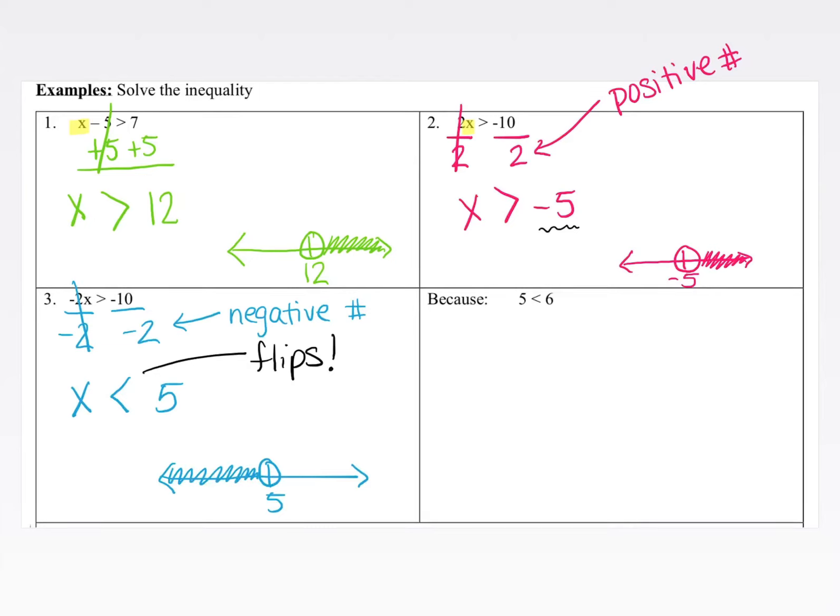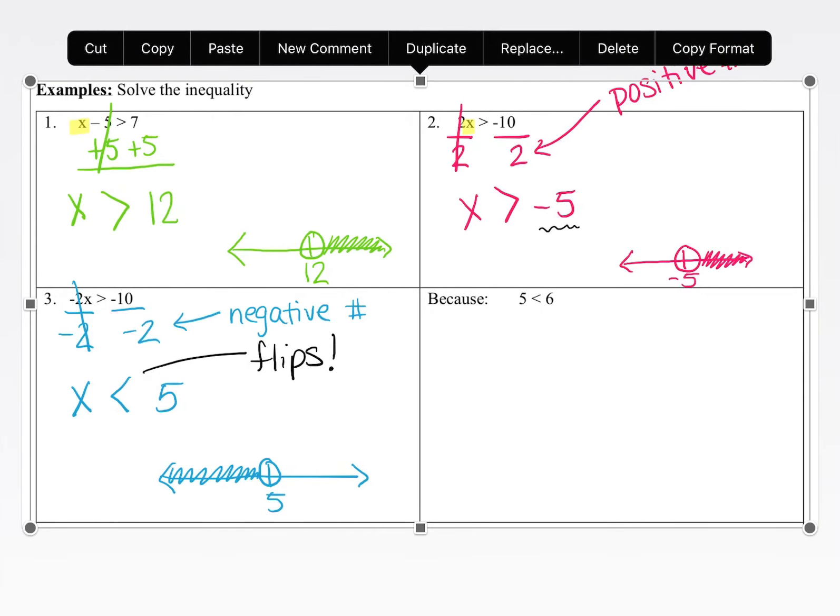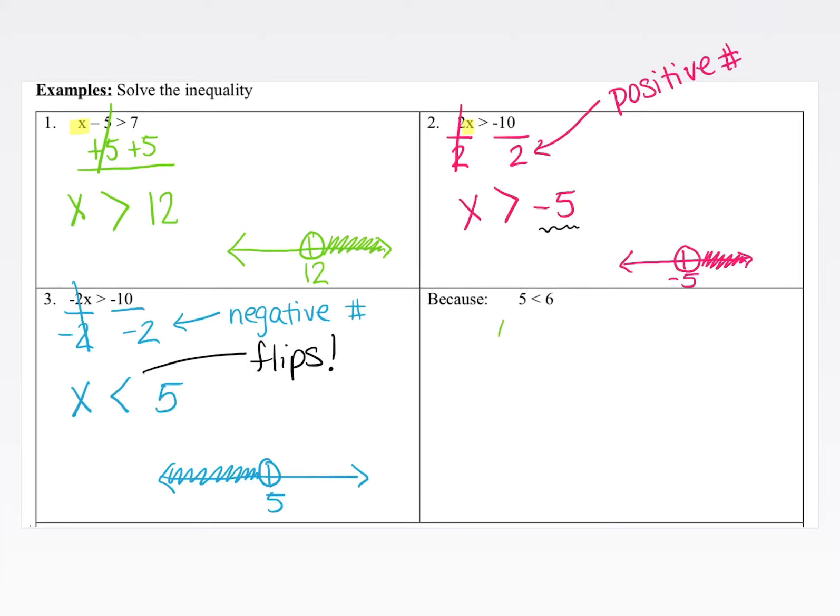Now why do we actually need to flip that inequality? Let's test something out. 5 is less than 6, correct? Last time I checked. What if I introduce the property of equality and I want to multiply both sides by a negative 1? Well, as long as what I do to one side I do to the other, it's okay. So I'm going to multiply both sides by a negative 1. 5 times negative 1 is negative 5, and 6 times negative 1 is negative 6.